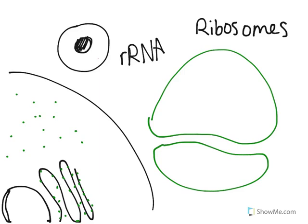So this shaded in part would be the nucleolus within this nucleus. And this nucleolus creates a large subunit and a small subunit of the ribosome. So a ribosome is created out of two separate parts.